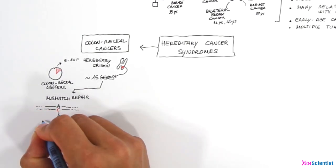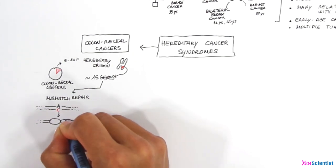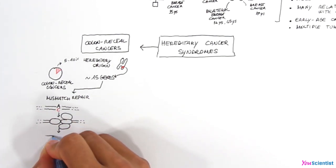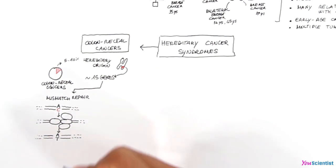sometimes the replication machinery can introduce errors in the newly formed DNA sequence. The mismatch repair system is able to find and fix the error.